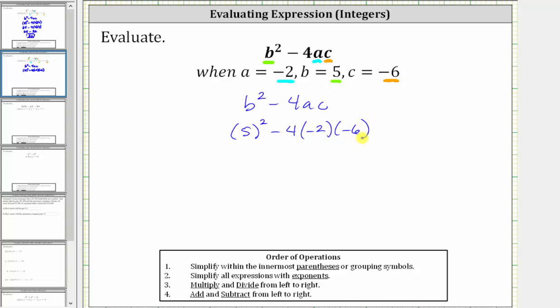And now we evaluate the expression following the order of operations. The first step is to simplify the exponents. Five squared is equal to 25, which gives us 25 minus four times negative two times negative six.